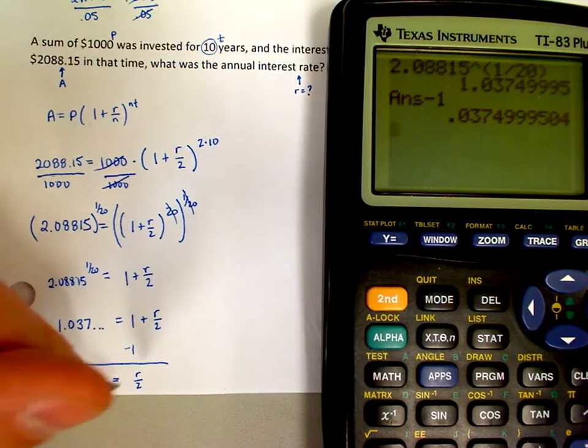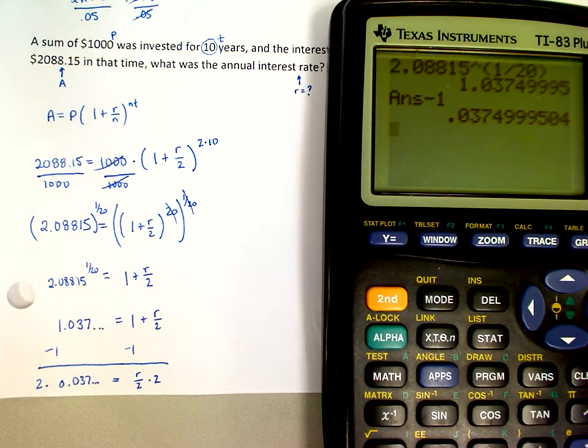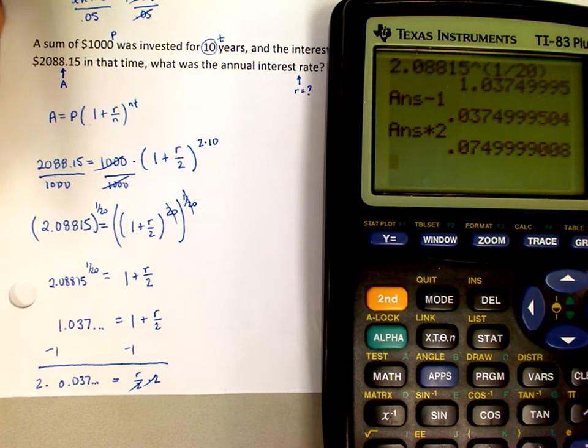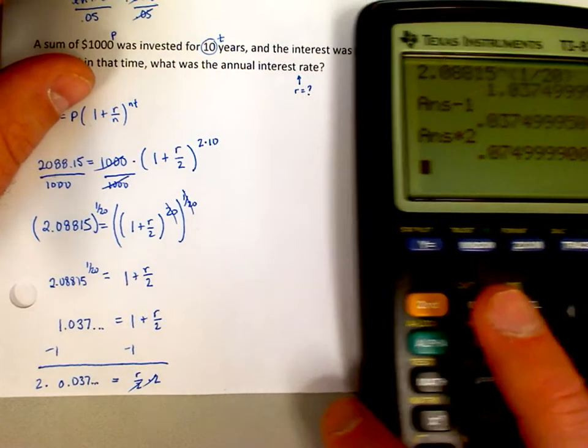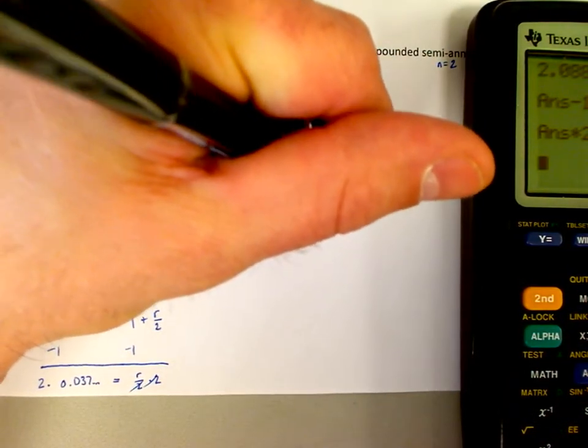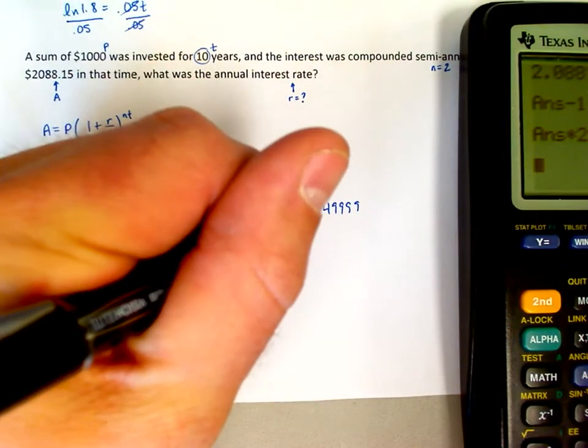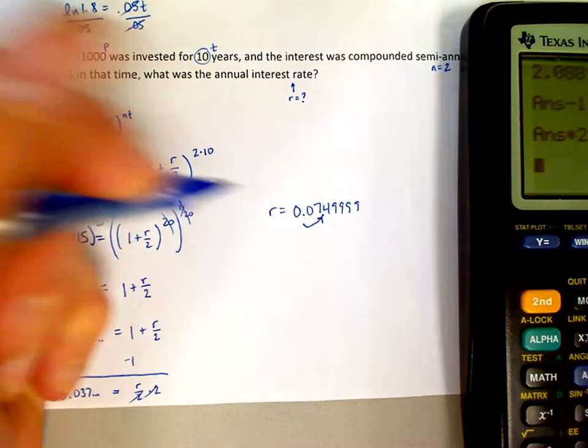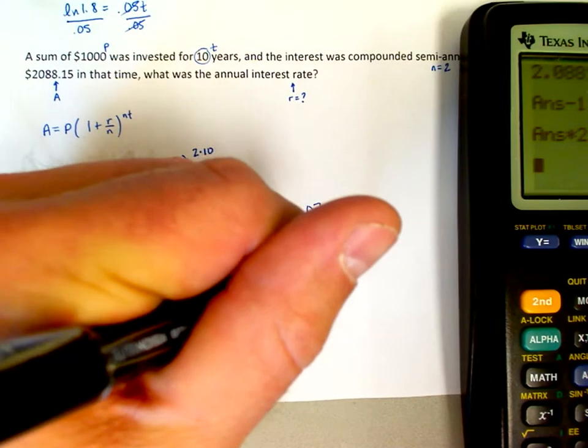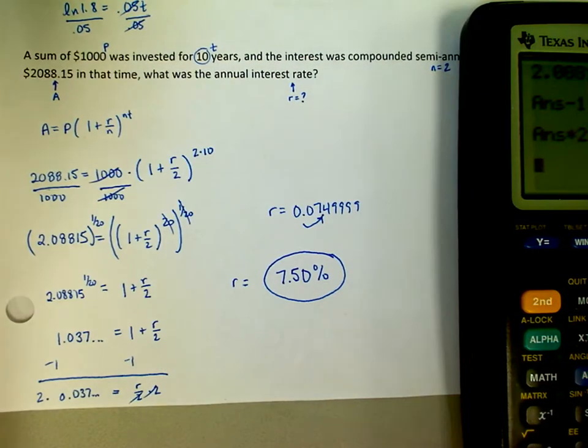And now the last step is to get the R by itself. It's cut in half right now, so I need to double both sides. I need to multiply both sides times 2. That gets rid of this. The interest rate is going to be times 2, 0.07499999. So the interest rate is 0.07499999. Now that's a decimal form of a number. So just remember, all we do then is we multiply by 100 or we move the decimal point over two spots. It's 7.499999, which we can round up to 7.50% is the interest rate. So there's the percentage format.